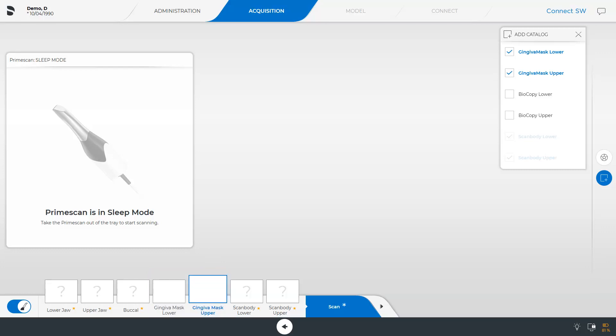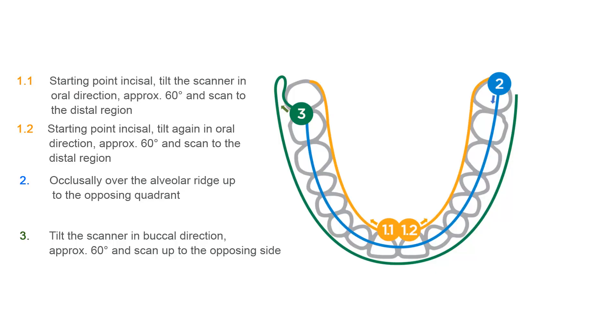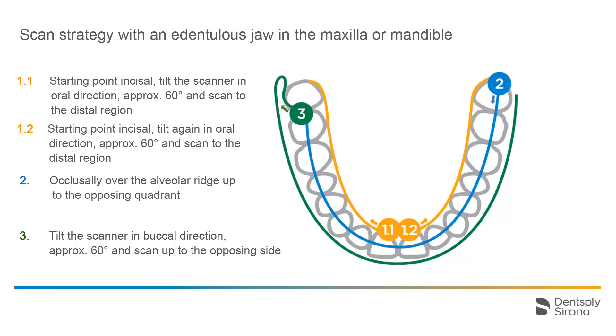These catalogs are optional image catalogs. Since this video is focused on the workflow, we skip the scan process of the individual catalogs. Nevertheless, we will briefly describe the corresponding scan strategy using a sketch. The starting point is incisal, and we tilt the scanner by approximately 60 degrees in oral direction.